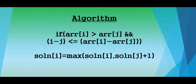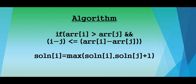The algorithm: if array[i] > array[j] AND i minus j is less than or equal to array[i] minus array[j], then solution[i] = max(solution[i], solution[j] + 1). This concludes the video. Give it a thumbs up, put your doubts in the comments — I'll answer within 24 hours. Goodbye!